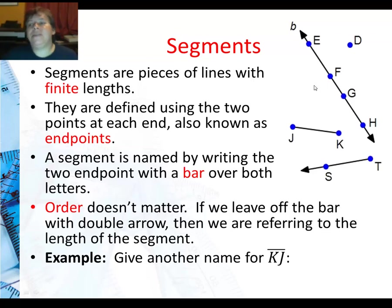Order doesn't matter. So if we leave off the bar with a double arrow, then we're actually referring to the length of the segment. So in our example, we're going to give another name for this segment. It's called KJ here, and the other possible name is JK. Notice no arrows, two points, two capital letters.